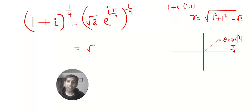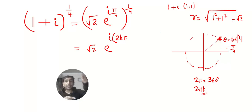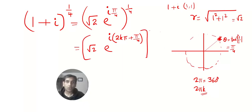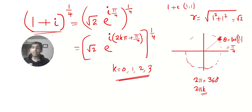Now generalize the angle by adding multiples of 2π, since every 360° rotation returns to the same point. Write √2 · e^(i(2kπ + π/4)), then raise to the power 1/4. Plug in k = 0, 1, 2, 3 to get all four 4th roots of (1 + i)^(1/4).